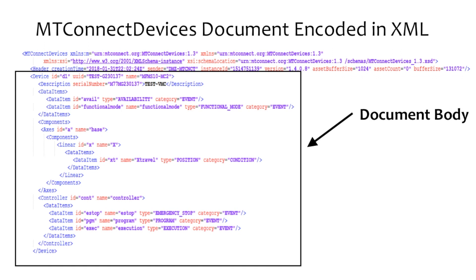If the request from the client software application was for the actual data published by one or multiple pieces of equipment, then the contents of the response document will be organized based on the semantic data model defined in part 3 of the standard, the Streams Information Model. The resulting response document is called the MT-Connect Streams Response Document.